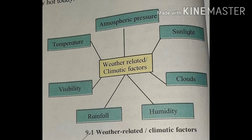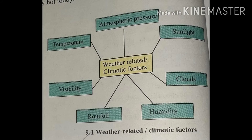Factors related to weather and climate include temperature, atmospheric pressure, sunlight, clouds, humidity, rainfall, and visibility. These factors determine how the weather or climate behaves. Since weather and climate are interrelated and dependent on each other, for example, untimely rainfall in winter is now being experienced due to climate change affecting weather. Rising temperatures over the years show that climate change is causing weather change — these factors are all interrelated.